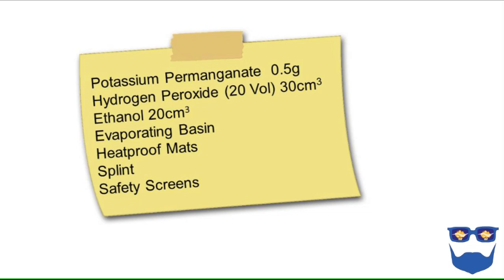Here is a suggested technicians list for this experiment: potassium permanganate about 0.5 grams, 30 centimetres cubed of 20 volume hydrogen peroxide, 20 centimetres cubed of ethanol, an evaporating basin, heatproof mats — I have six of them — a splint and a safety screen.